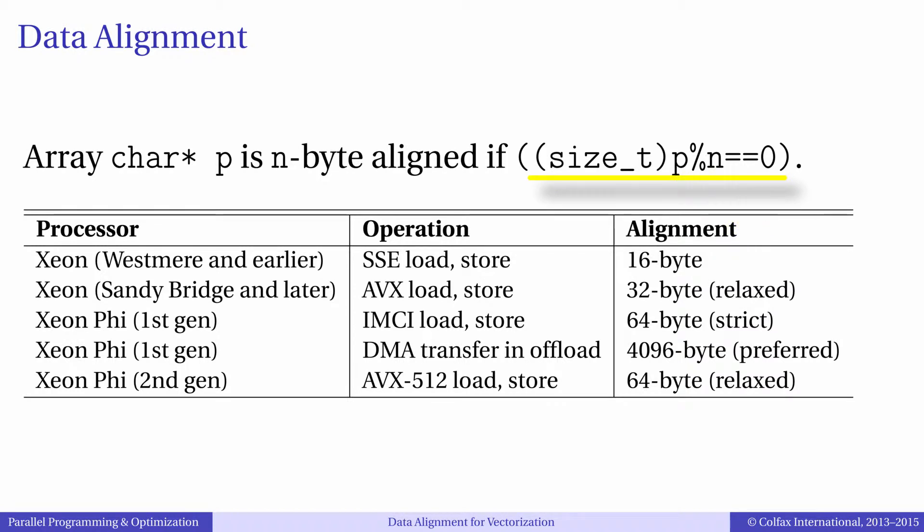Alignment is especially important for vectorization, because when you load data from memory into a vector register, some instruction sets require that you load from an aligned memory address.